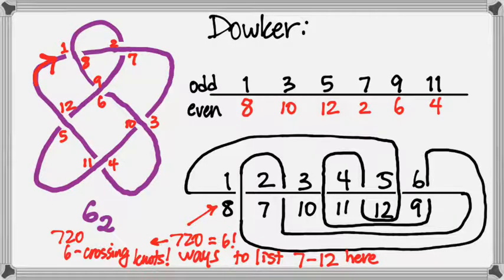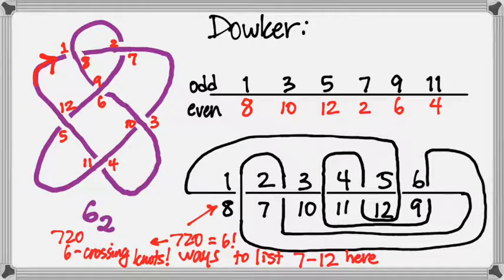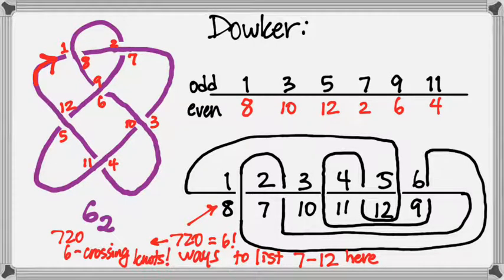One fun exercise: this is one example of a Dauker notation for 6-2. Can you find a different one — still six crossings but listing 7 through 12 in a different order? There must be some, because if we look in the knot table at the back of the book, there are not 720 different six-crossing knots listed — there's a total of three. If we took that same sketch but picked a different starting point, we would likely get a different set of numbers on the bottom.